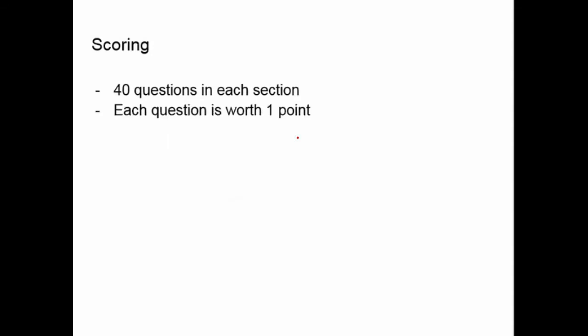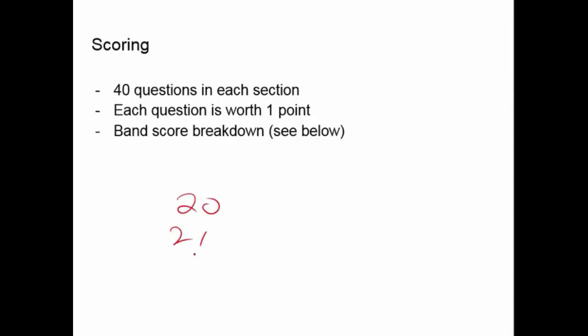For scoring, you have 40 questions in the section and each question is worth one point unless told otherwise. There is a table at the link below that gives you information about scoring — every score possibility will give you a band score related to that particular raw number you got.